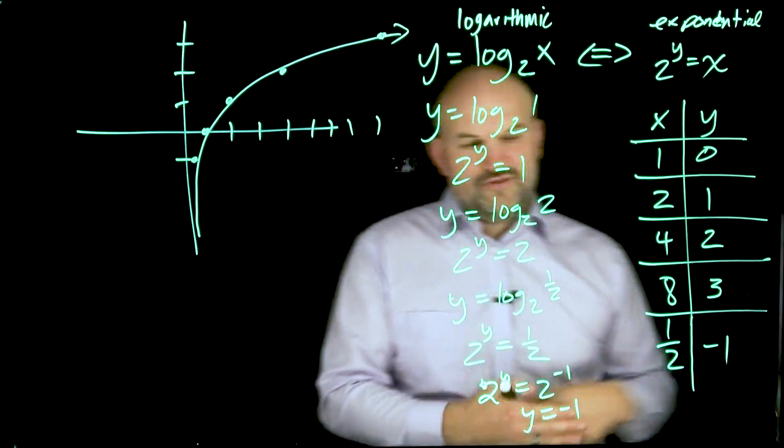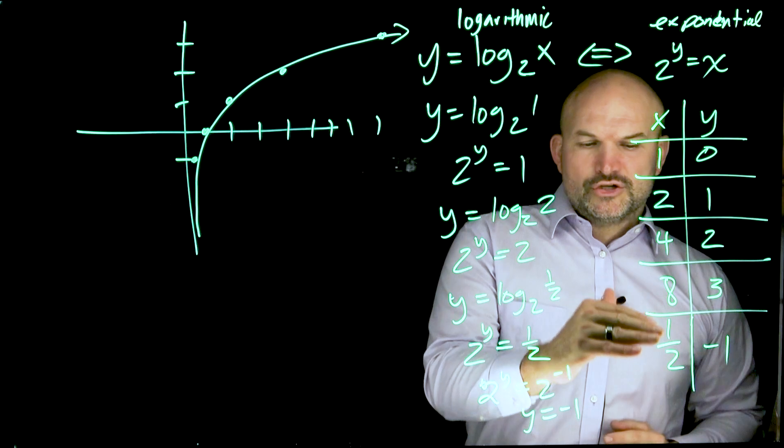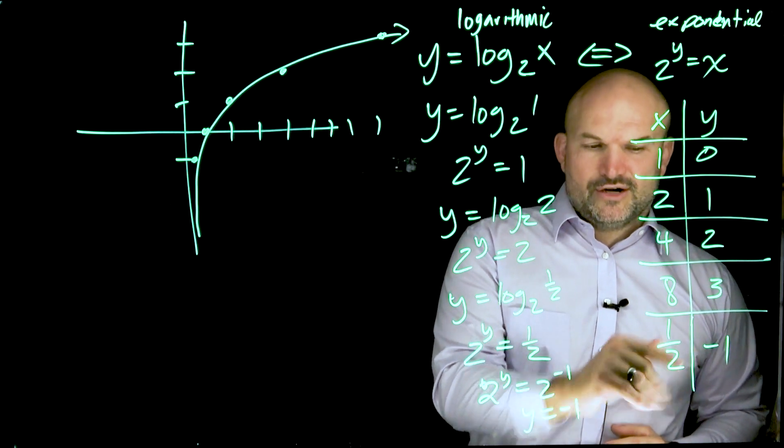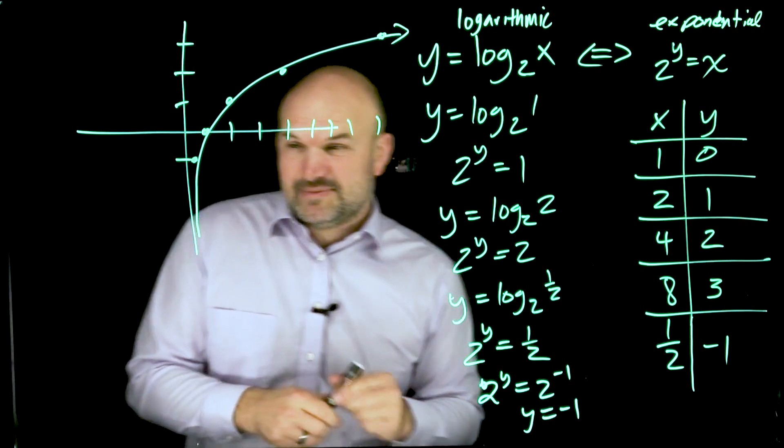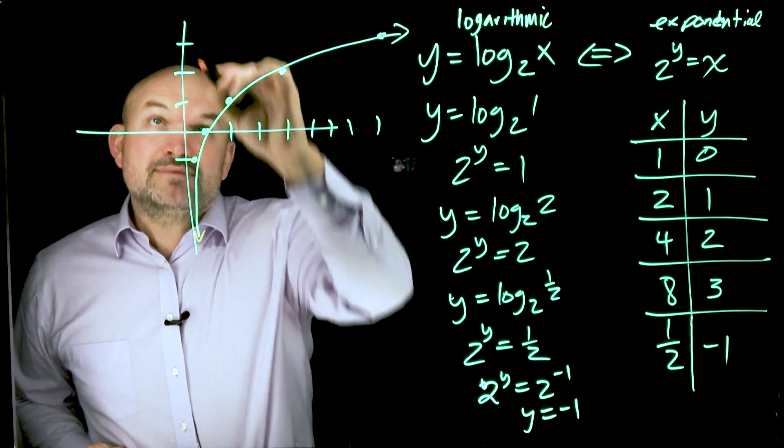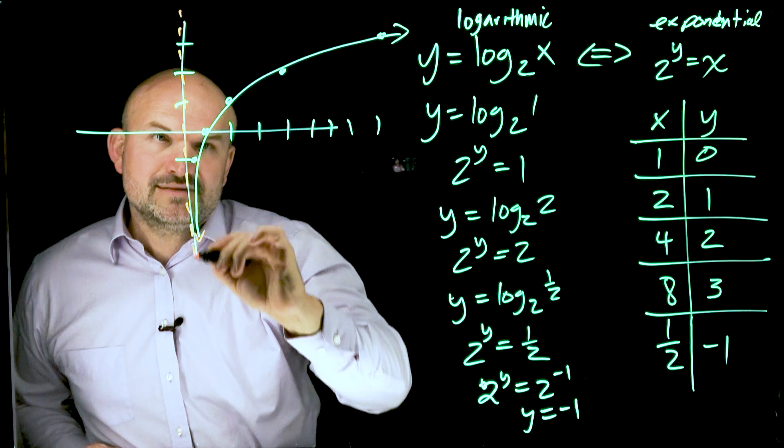as we talked about with the exponential functions, as I keep on doing closer and closer fractions that are getting closer and closer to zero, I'm going to start getting bigger and bigger numbers. So just like we had with the exponential function, this graph is approaching a vertical asymptote.